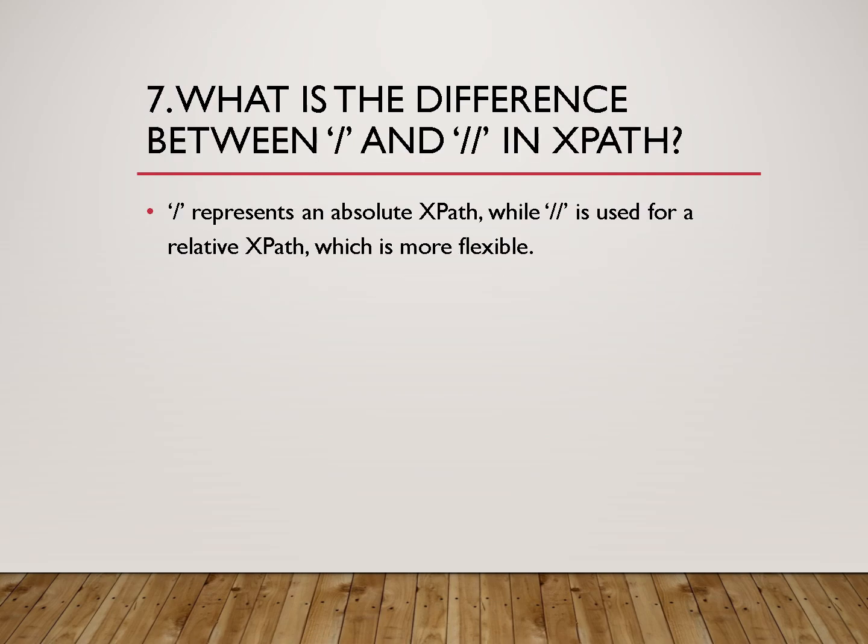The next question is: what is the difference between single slash and double slash in XPath? A single slash represents absolute XPath and selects an element from the root node, following an exact path based on hierarchy. A double slash represents relative XPath and selects an element from anywhere in the document, making it more flexible and reliable. You can also explain why double slash is preferred over single slash.